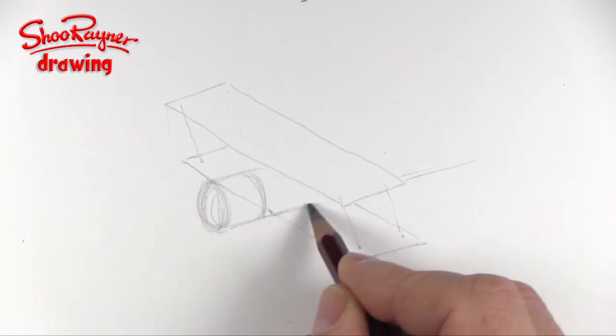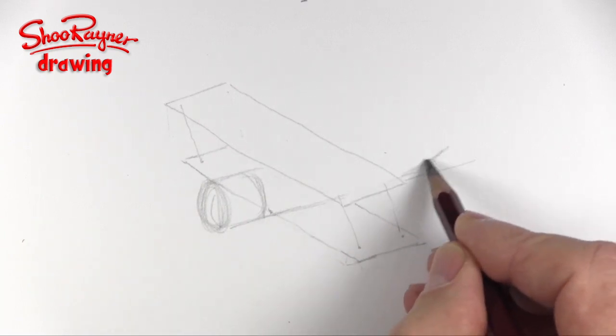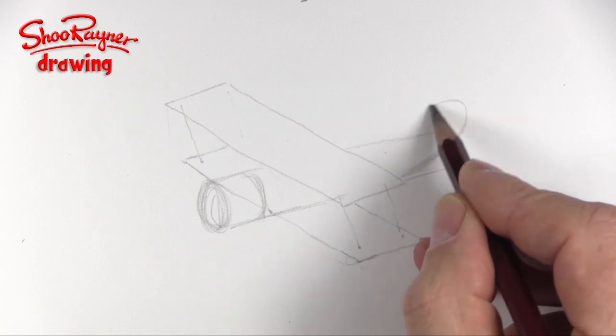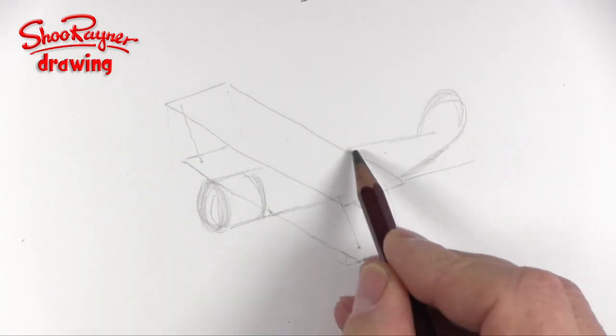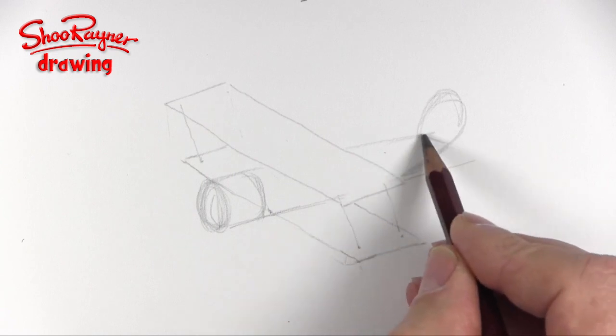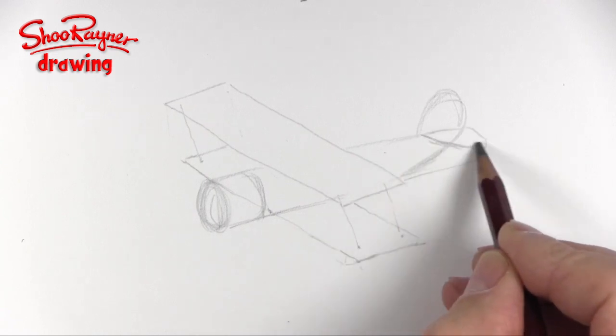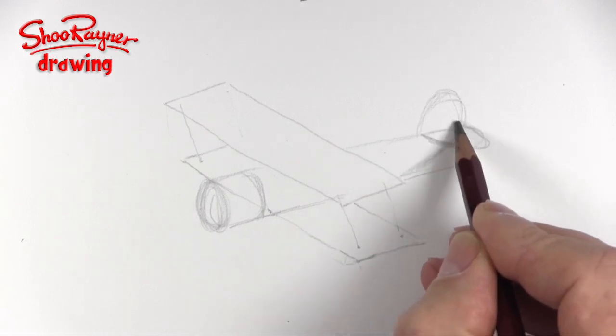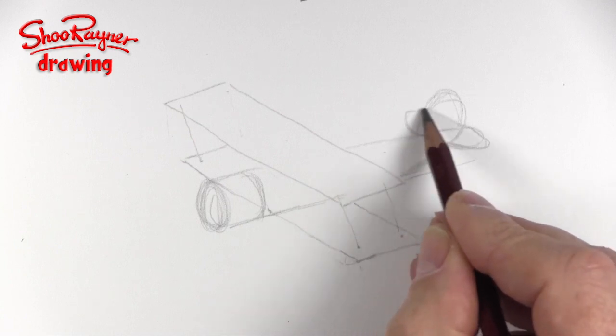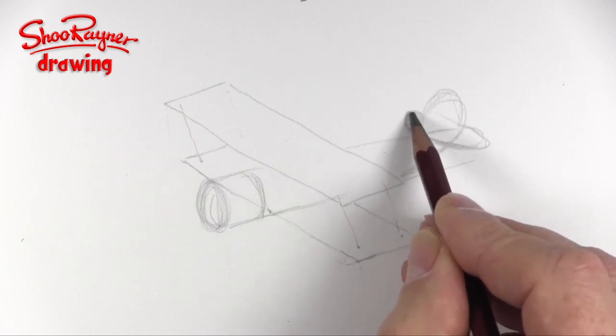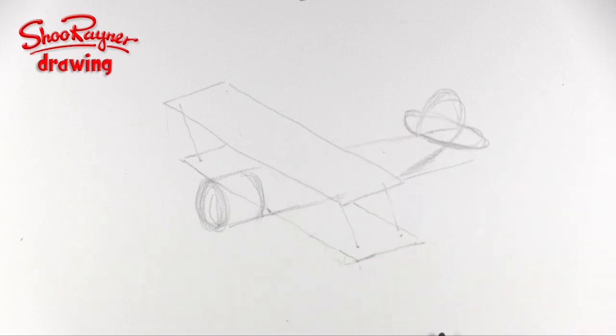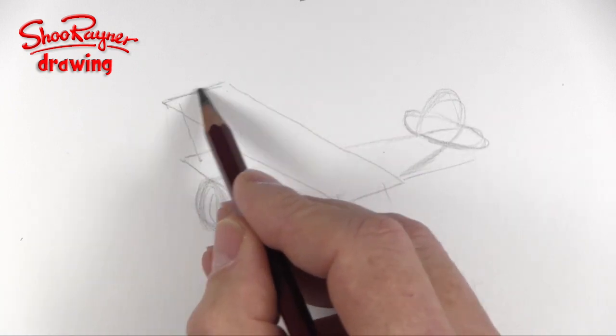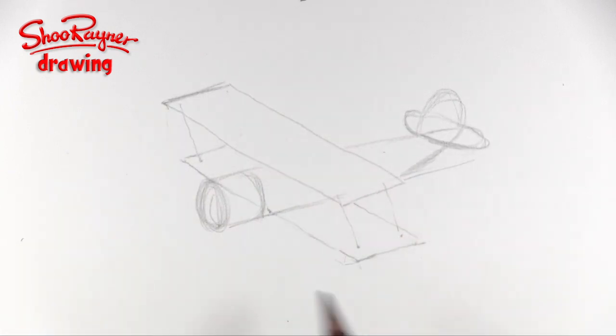The engine cowling on the front of the aircraft and then this is going to kind of come up to about there and we'll have the tail plane there. The tail plane will also be then sort of coming out at an angle like that and that will be hiding kind of around the back there so you just see this little bit like that.